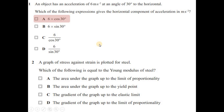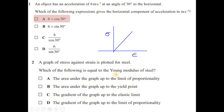Question 2: a graph of stress against strain is plotted for steel. Which of the following is equal to the Young's modulus of the steel? This is a typical question. If you have a stress-strain graph, most of the time we have a straight line. The Young's modulus is basically the gradient of that line — it is stress over strain.